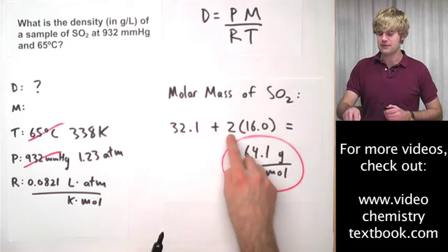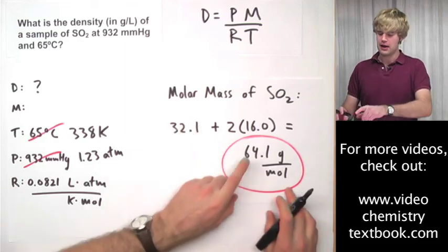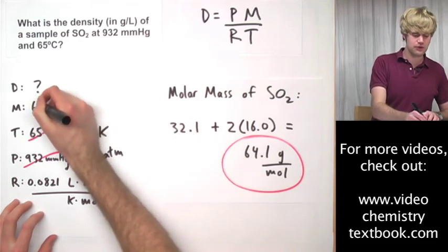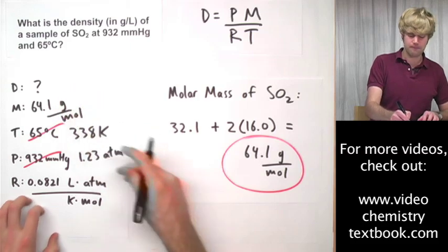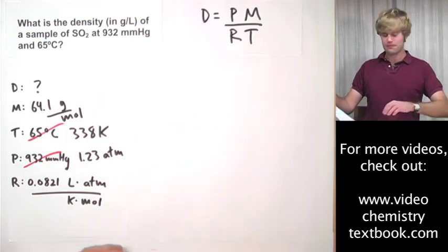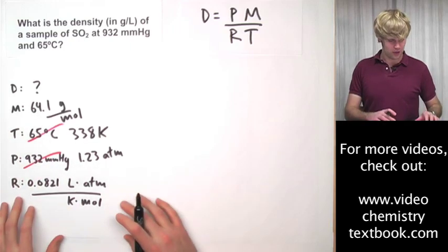and add it to two times the molar mass of oxygen because I have two oxygens. When I do that, I'm going to get 64.1 grams per mole. Now I've got my molar mass, temperature and pressure, and I'm ready to go ahead and solve the equation.